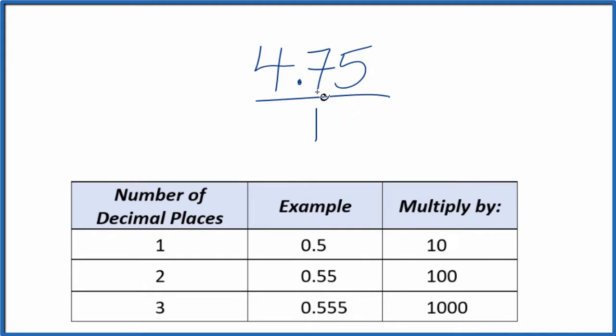What I need to do is get 4.75 to a whole number, and I see I have two decimal places. So with two decimal places, I can multiply by 100, and that'll give me a whole number. So 100 times 4.75, that'll give me 475. And now we have our whole number.